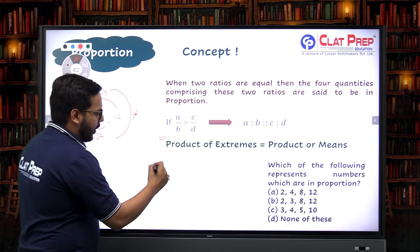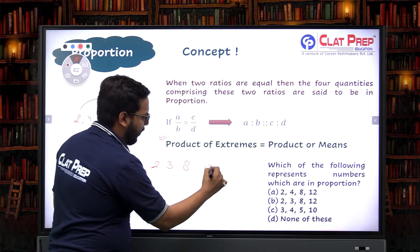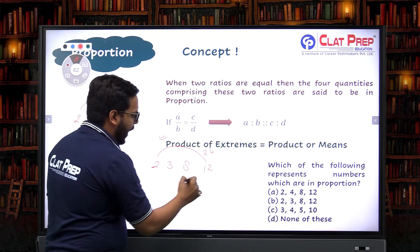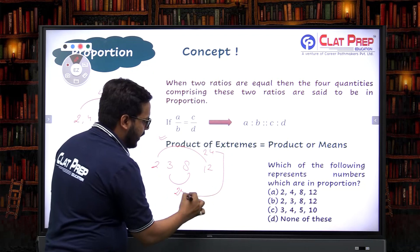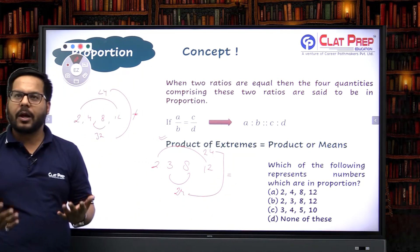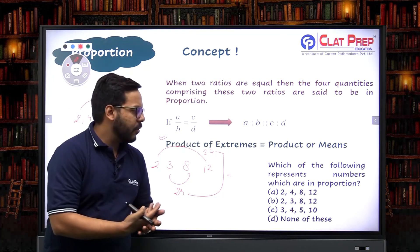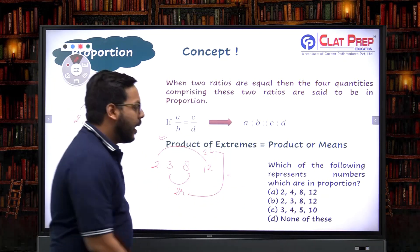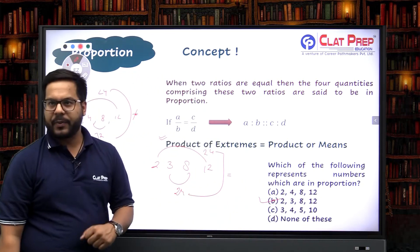For the next option: two, three, eight and twelve. Let's check — 12 into 2 is 24, and 8 into 3 is also 24. So you can clearly see that the product of extremes is equal to the product of means. Whenever this property holds, those four quantities are said to be in proportion — so the correct answer is option B.